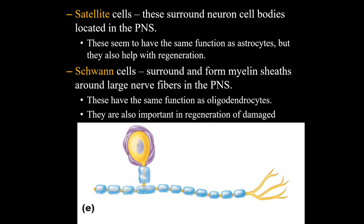Number five and number six are satellite cells and Schwann cells. Bracket to the left of these two and write peripheral nervous system, or PNS. In this picture, the purple cells are the satellite cells - notice they surround the cell body of this particular neuron. The Schwann cells are the bubbly cells, and they do the exact same thing oligodendrocytes did, only now in the peripheral nervous system. These two cell types will come back as important when we start talking about regeneration within the peripheral nervous system.